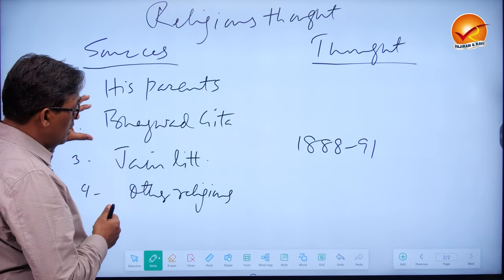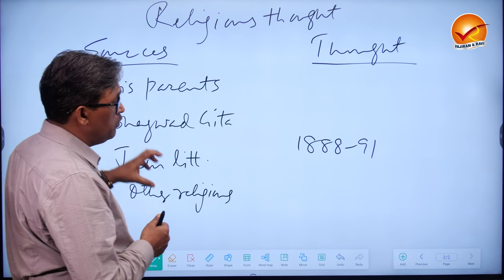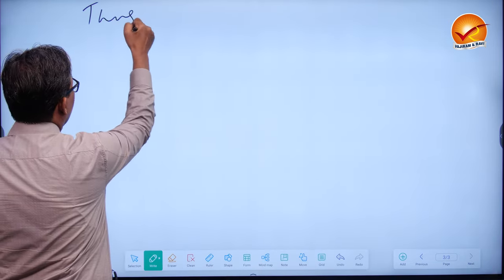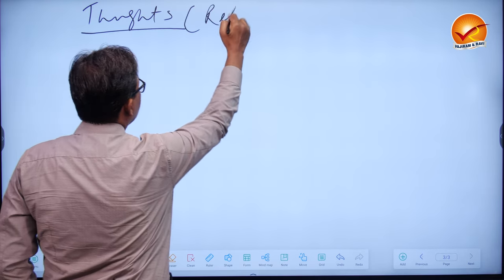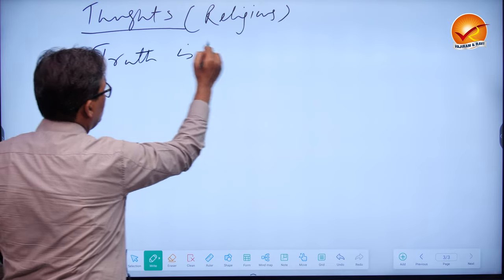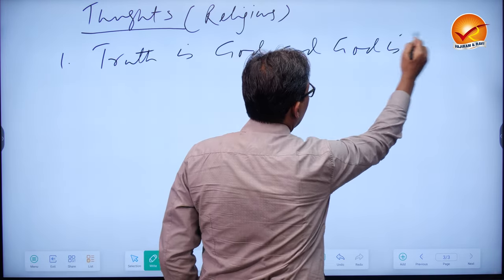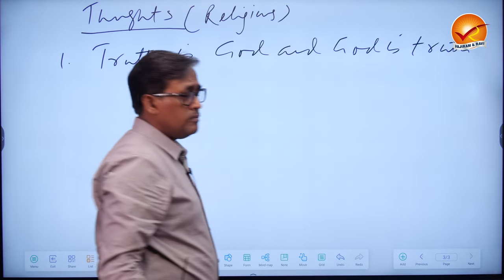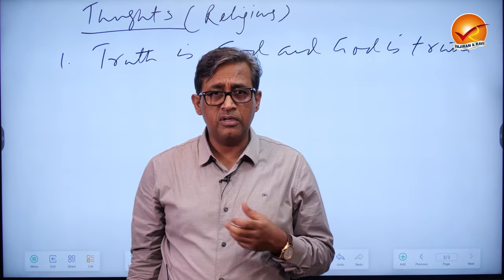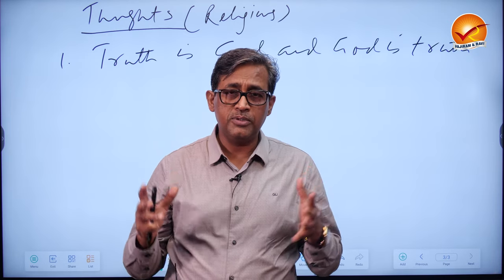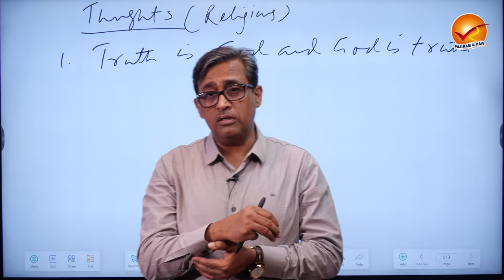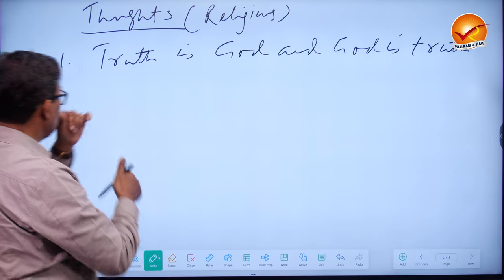Now, what lessons he learned and how he developed his thought — that is what you have to write under his religious thoughts. The first important thought he developed is: 'Truth is God, and God is truth.' Anything which is absolute truth — galaxies, gravitation, rotation, death — there is no doubt these are absolute truths. So they must have emanated from God. Anything which came from God must be true. That is the first important point.